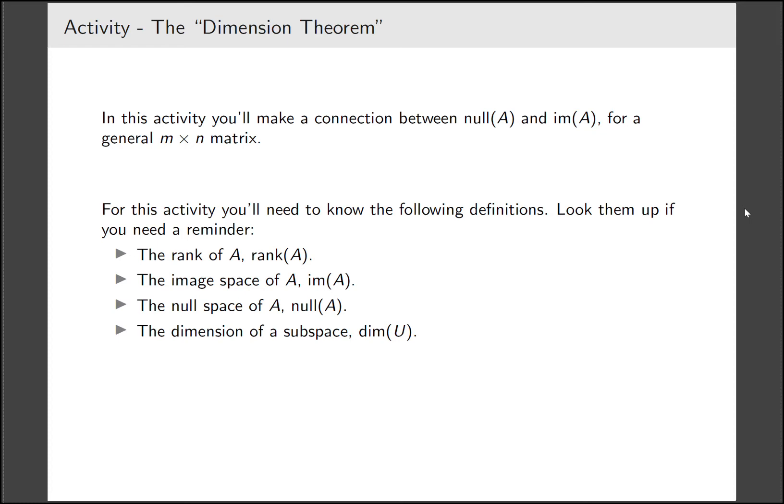The first thing we'll need is to remember the definitions of rank, image, null space and dimension. The rank is the number of leading ones in the reduced row echelon form of A. The image space is everything that looks like AX. So you take your matrix A and you multiply it by every single vector you can. All of the possible outputs is called the image space.